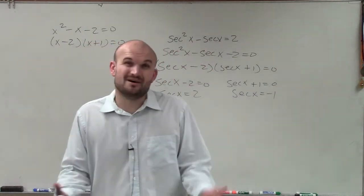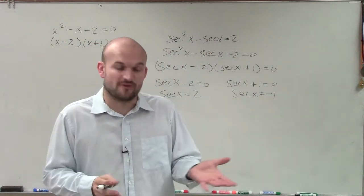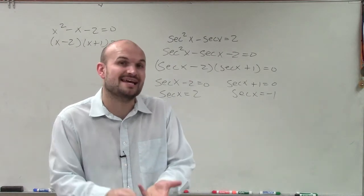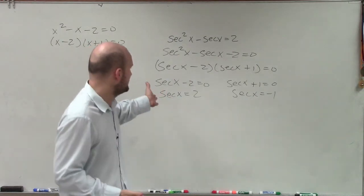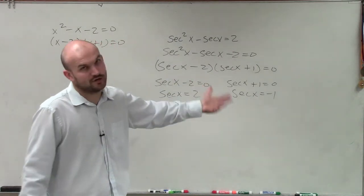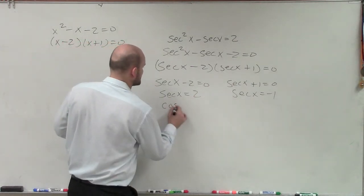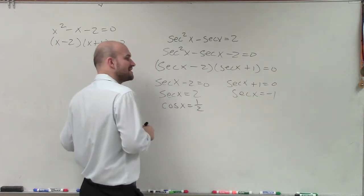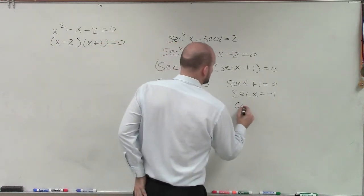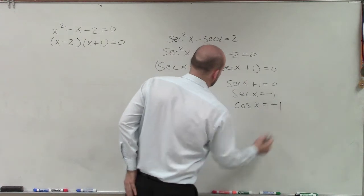Now as far as evaluating for the unit circle, it's much easier to evaluate for the reciprocal functions like cosine and sine and tangent rather than dealing with secant, cosecant, and cotangent. So what I'll do is I'm going to rewrite this in terms of its reciprocal, which would be cosine of x equals 1 half. And then here would be cosine of x equals negative 1.